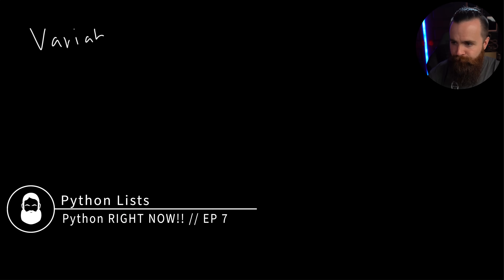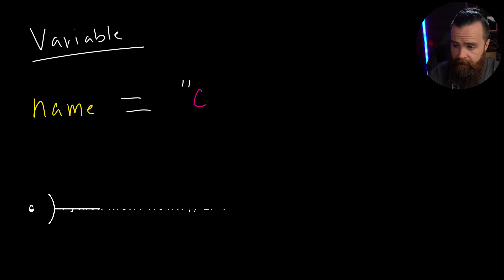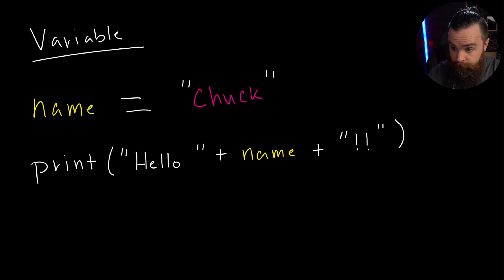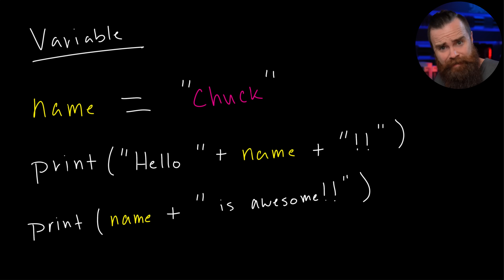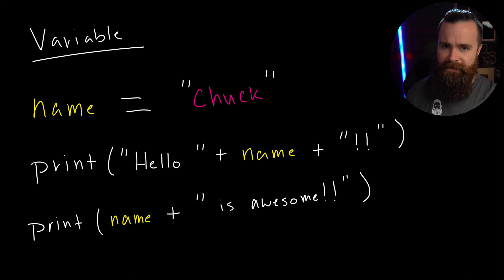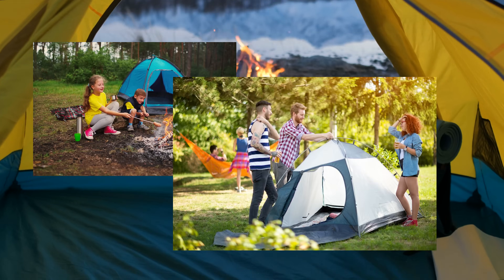Let's get started. So we covered a variable - we create it, assign it a simple piece of data and we can use it everywhere in our Python scripts. It's awesome. But let me show you when it's not awesome, because you and I, we're going on a camping trip, but you didn't know.